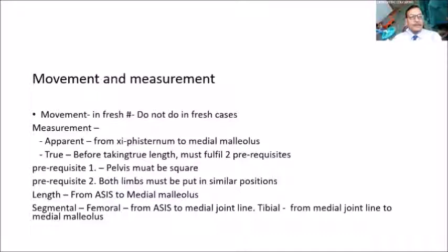For measurements, apparent limb length is from the xiphisternum to the medial malleolus. For true length, two criteria must be fulfilled: the pelvis must be square, and both limbs must be placed in similar positions — then take the length from the ASIS to the medial malleolus. For segmental measurement, femoral length is from ASIS to the medial joint line, and tibial length is from the medial joint line to the medial malleolus.